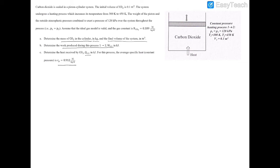We can start by writing out all of our givens. Conveniently, pretty much all of them are given to us, and we just add the gas constant: R_CO2 is equal to 0.189 kilojoules per kilogram Kelvin.